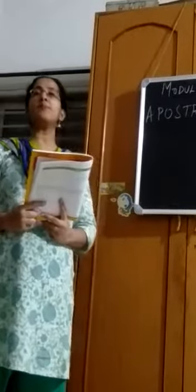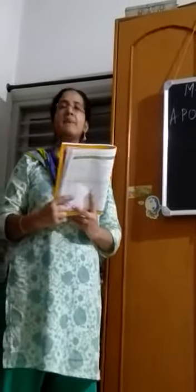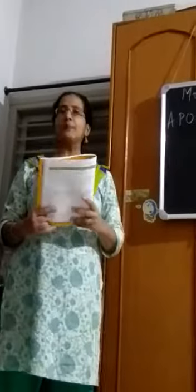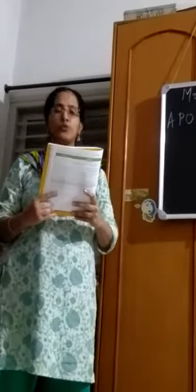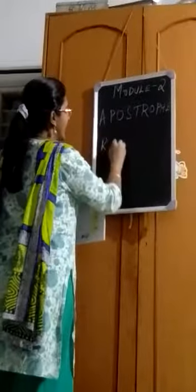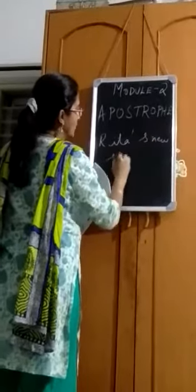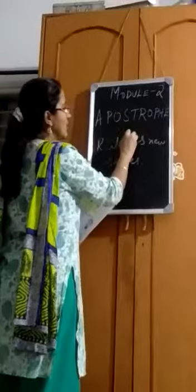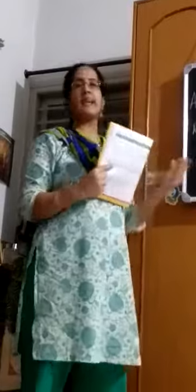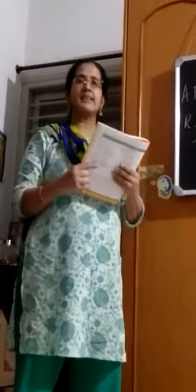Now let us talk about an apostrophe. What is an apostrophe? An apostrophe is used to show that something belongs to someone — that is possession. For example, we say Rita's new shoes. Whose new shoes are those? Rita's. This is called an apostrophe. Then Fred's house — that means that house belongs to Fred.